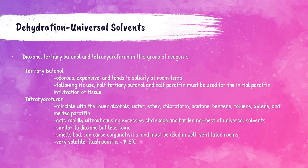Tertiary butanol is a smelly and expensive universal solvent that solidifies at room temperature. If used as a dehydrating agent, half tertiary butanol and half paraffin must be used for the first paraffin infiltration. OSHA's eight-hour PEL is 100 parts per million. Tetrahydrofuran is often considered the best of the universal solvents; it can be mixed with other alcohols, water, ether, chloroform, acetone, benzene, toluene, and melted paraffin.